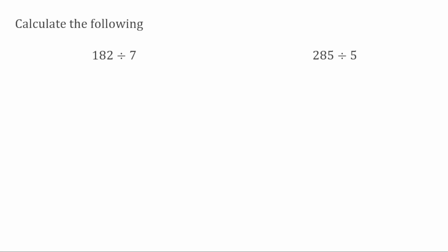So for this first example, I've got 182 divided by 7. I'm going to start by drawing my lines. I'm going to have 182 on the inside and then 7 on the outside. So what we want to do first is see how many 7s can we fit into 1. Well, that would be 0, so I'm going to just move along to my next digit, which is an 8.